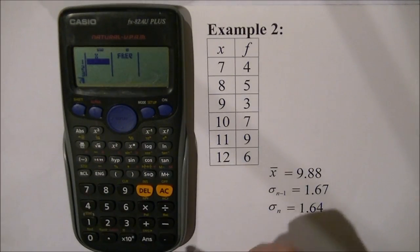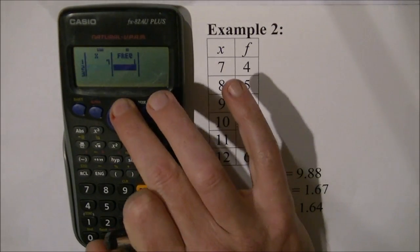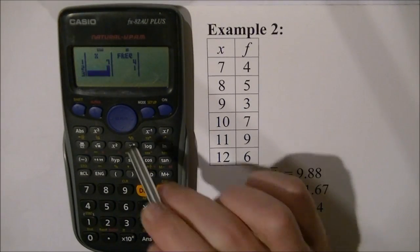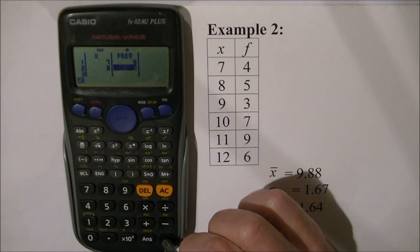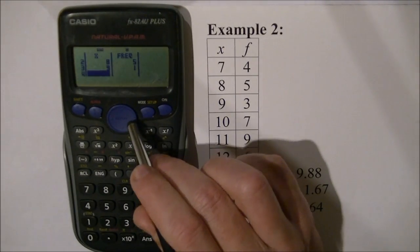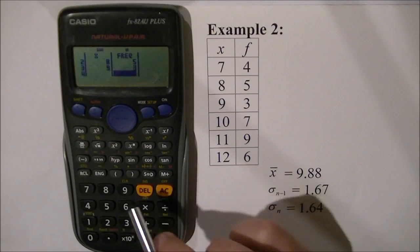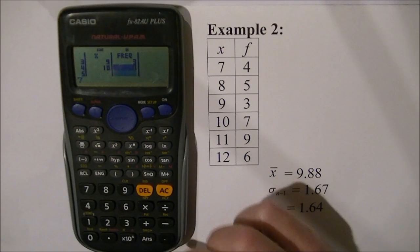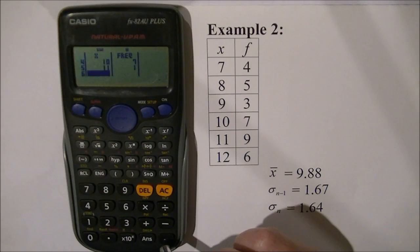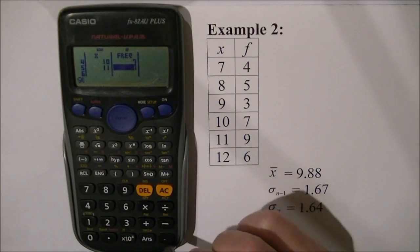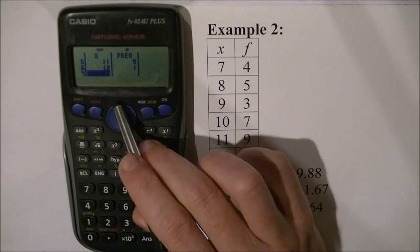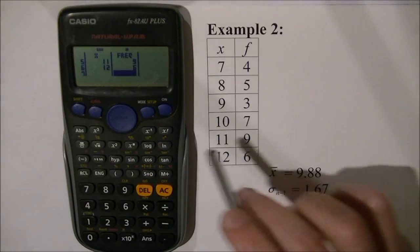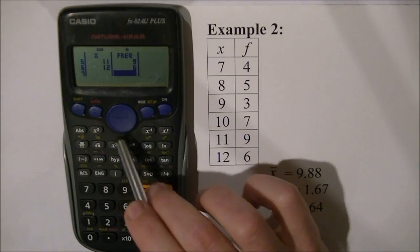Now I enter seven, press equals — it tells me it happened once, so I go across and enter four for the frequency. Then eight, press equals, and enter five times. Nine, press equals, and enter three times. Ten, press equals, and enter seven times. Eleven, press equals, and enter nine times. Twelve, press equals, and enter six times. That's typing in these values into the calculator using the buttons to navigate around the screen.